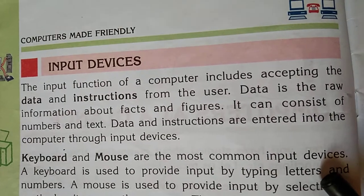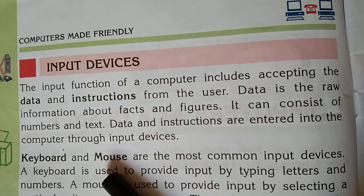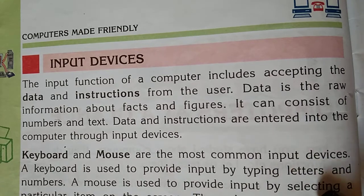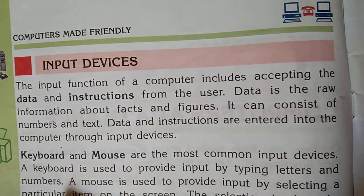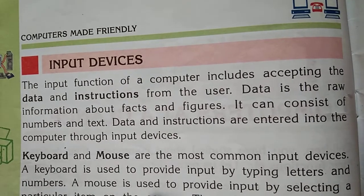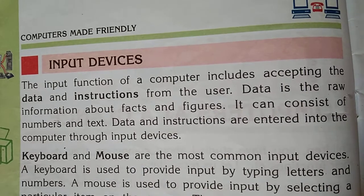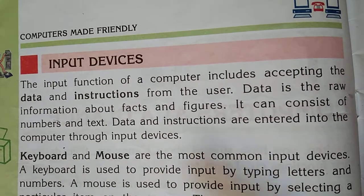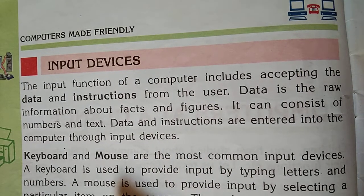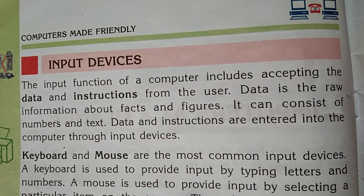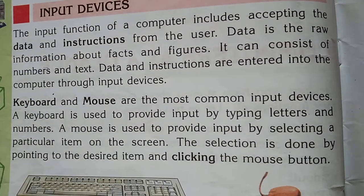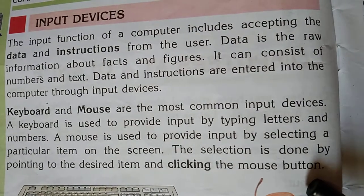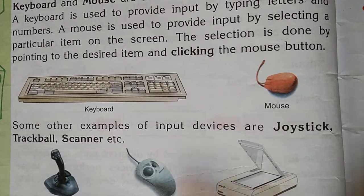Keyboard and mouse are the most common input devices used with computers. Keyboard is used to provide input by typing letters and numbers — we type data from the keyboard. A mouse is used to provide input by selecting a particular item on the screen; the selection is done by pointing to the desired item and clicking the mouse button. That is how we give input from the mouse.